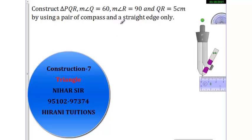Otherwise, you will be confused. So first of all, we need to do QR with which measurement should be 5 cm. So I will take my scale and we will draw a line of 5 cm.